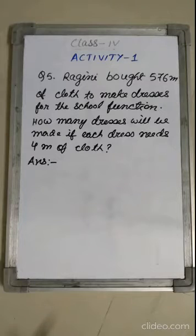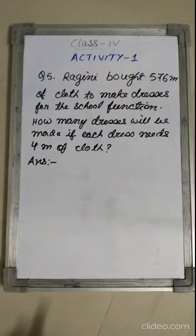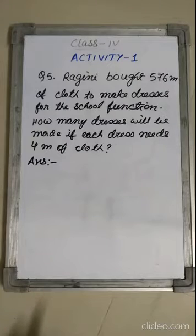Good morning dear students. We are continuing with Activity 1. Let us solve some work problems. Question number 5: Ragini bought 576 meters of cloth to make dresses for the school function. How many dresses will be made if one dress needs 4 meters of cloth?